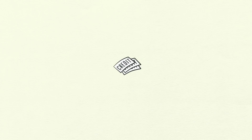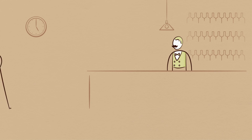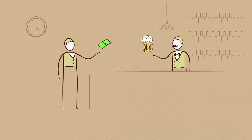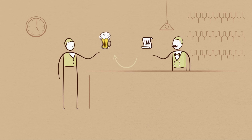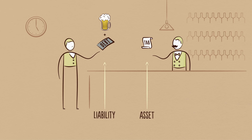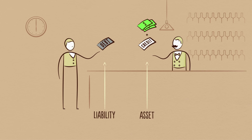This makes credit different from money. Money is what you settle transactions with. When you buy a beer from a bartender with cash, the transaction is settled immediately. But when you buy a beer with credit, it's like starting a bar tab — you're saying you promise to pay in the future. Together, you and the bartender create an asset and a liability. You just created credit out of thin air. It's not until you pay the bar tab later that the asset and the liability disappear, the debt goes away, and the transaction is settled.